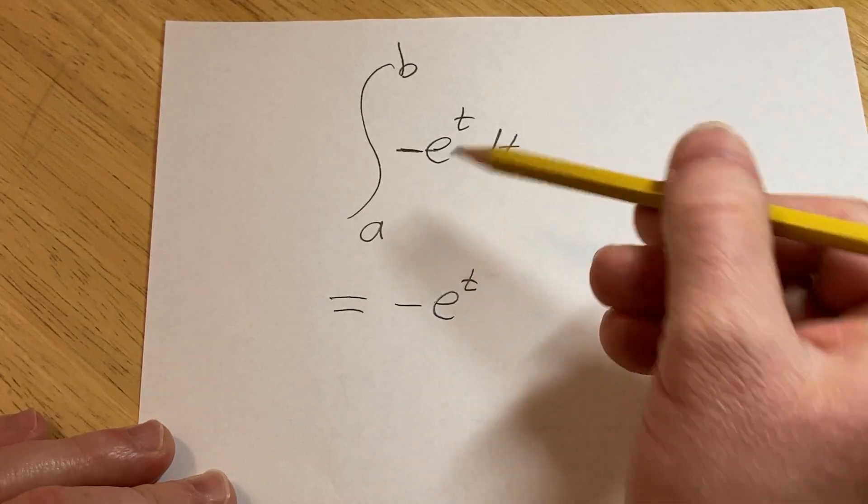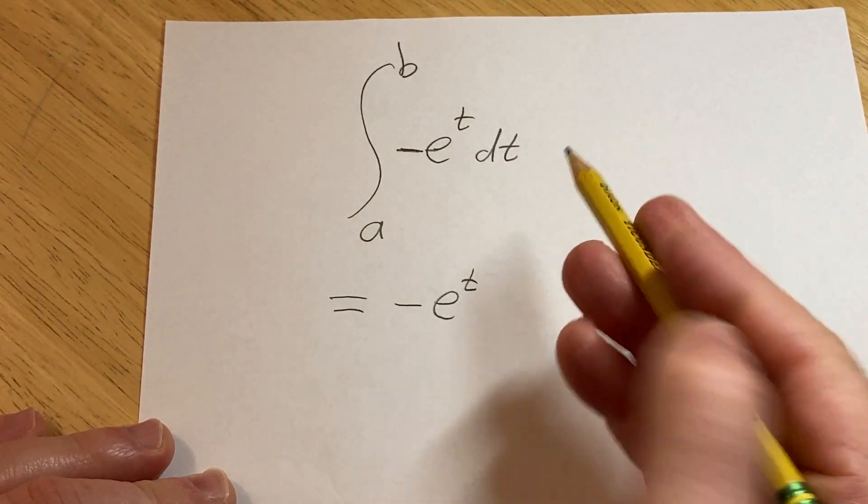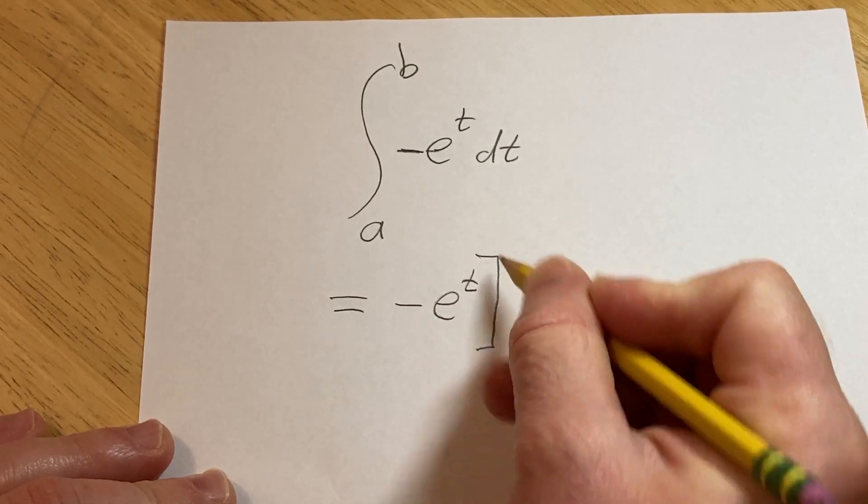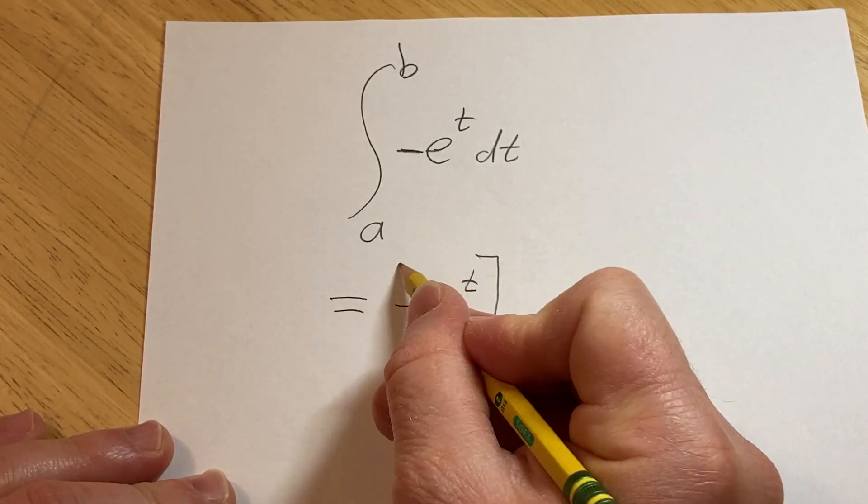So this is equal to minus e to the t. And because it's a definite integral, we have to write the limits of integration. Now, I like to use a bracket. You can use a line as well, or you can use two brackets if you like, like this.